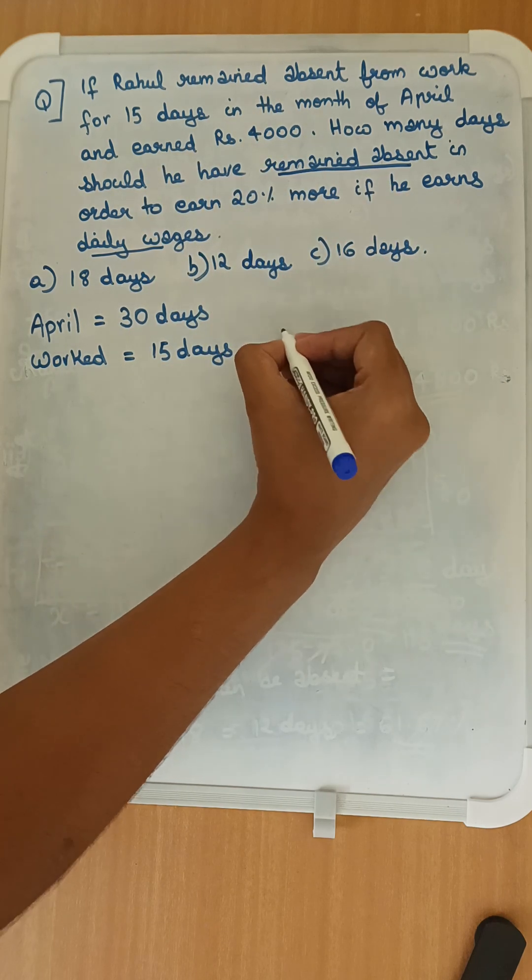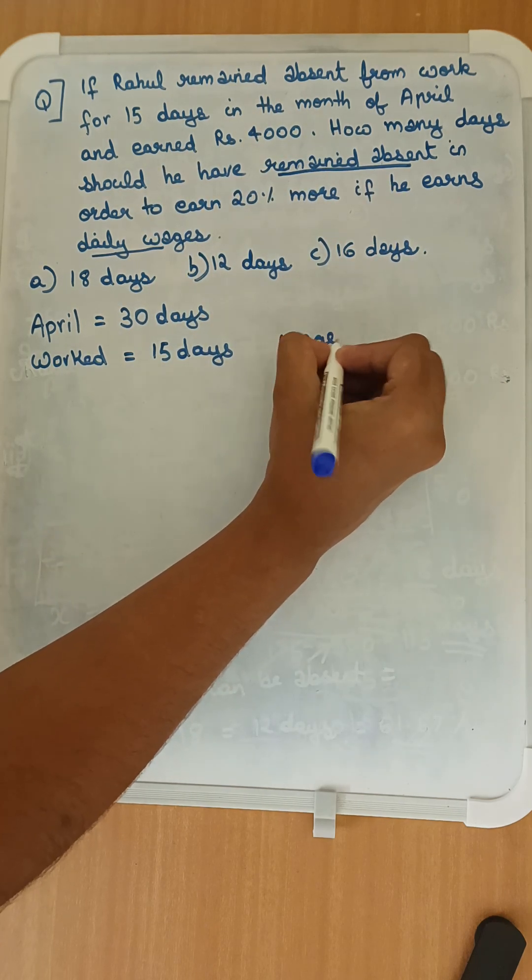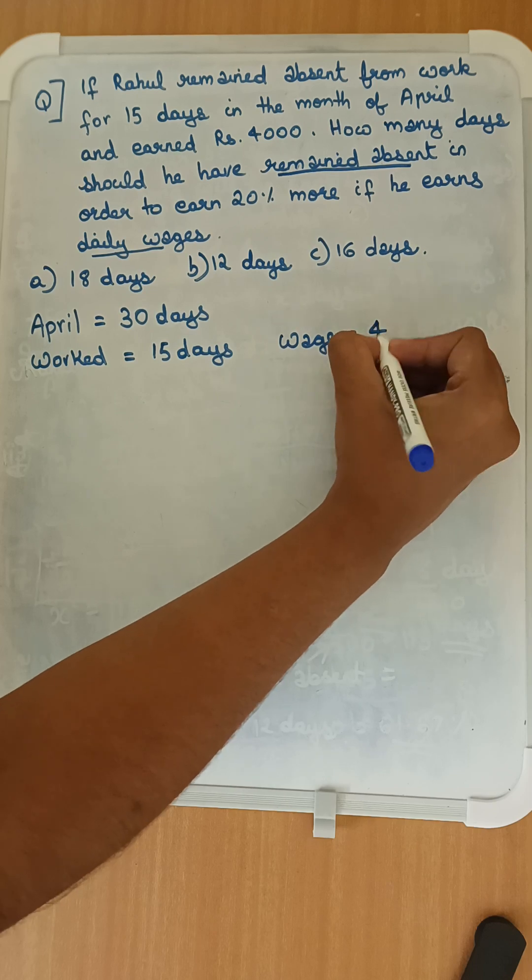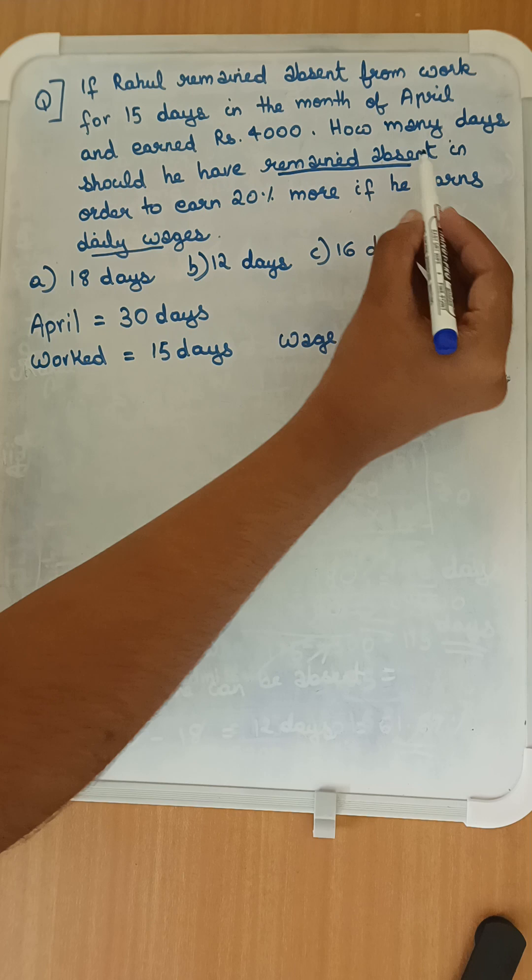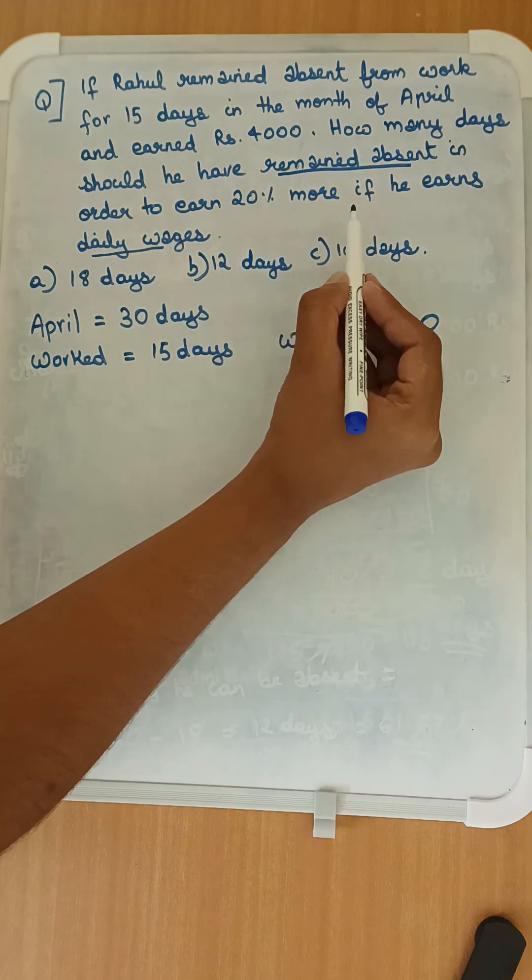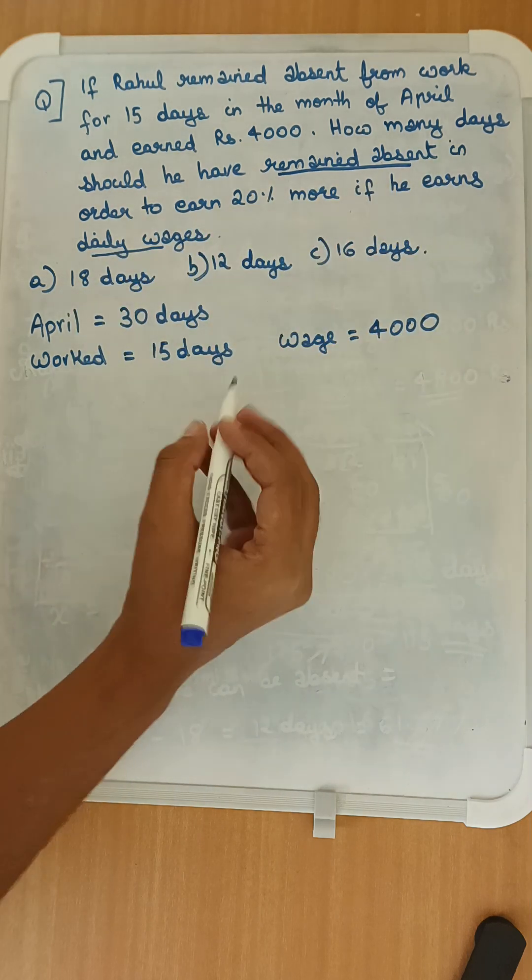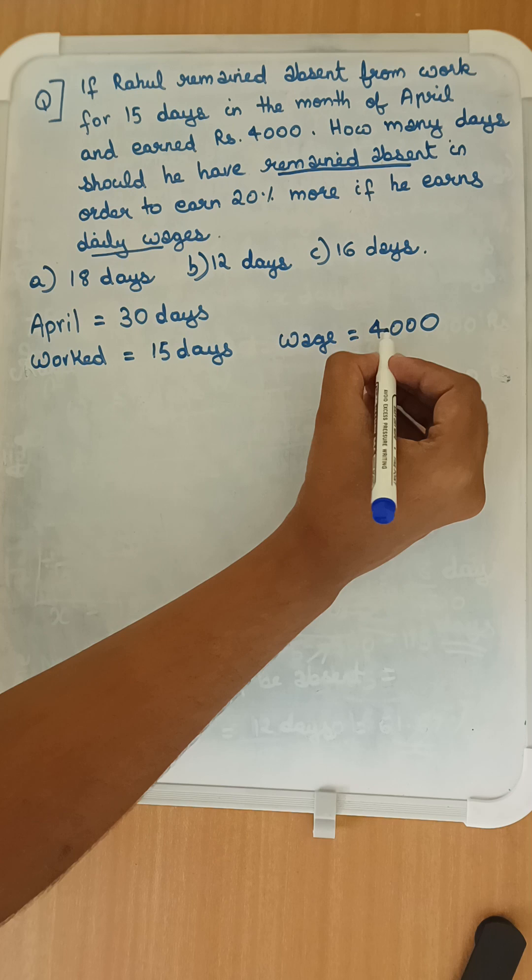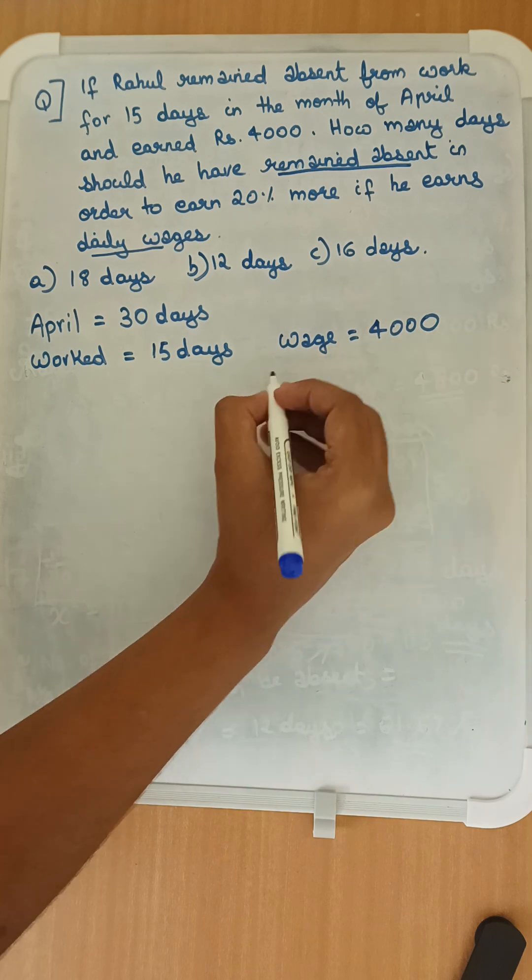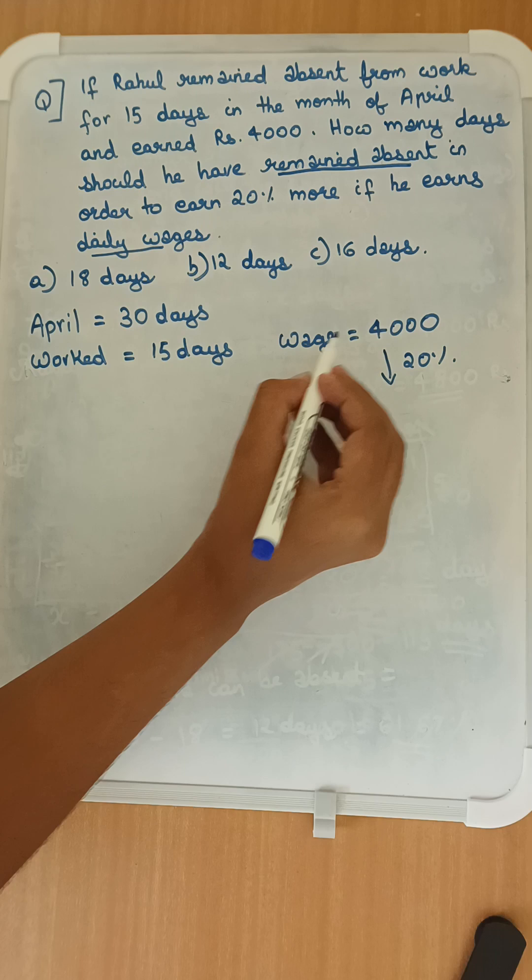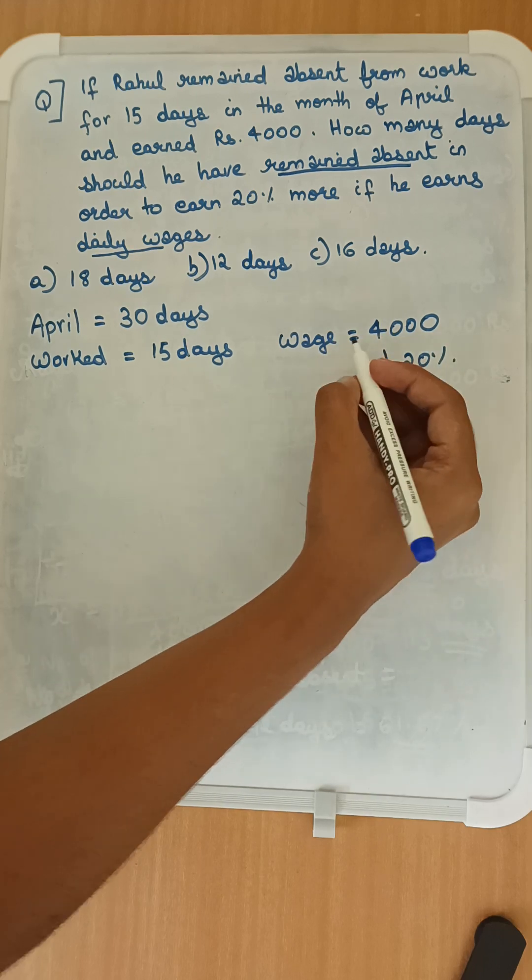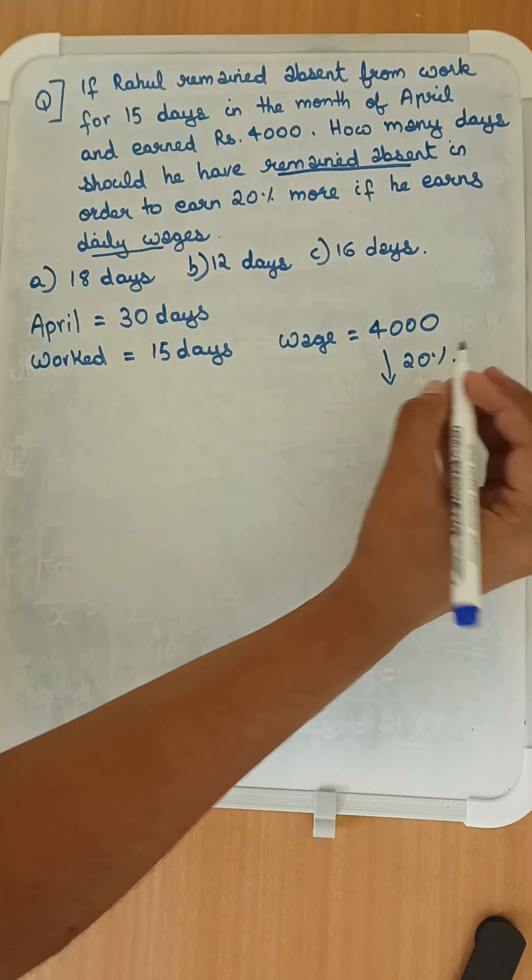So he worked for 15 days and his wage was 4,000. How many days should he have remained absent in order to earn 20% more? To earn 20% more of 4,000, we calculate: 10% of 4,000 is 400, so 20% of 4,000 would be 800.